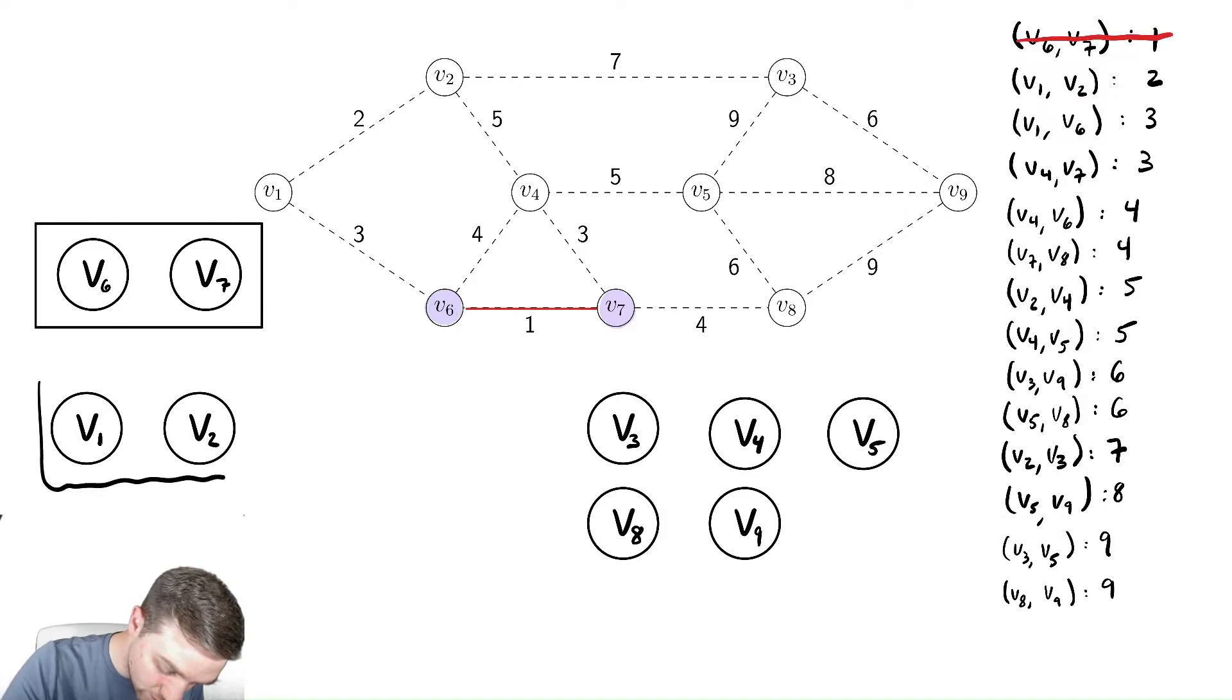We're going to create a set for these two vertices, and it is a disjoint set from the one we just discussed. And in our tree, we're going to add v1 and v2 and the edge between them, and then remove that edge from the list.